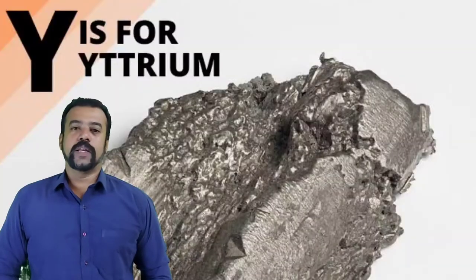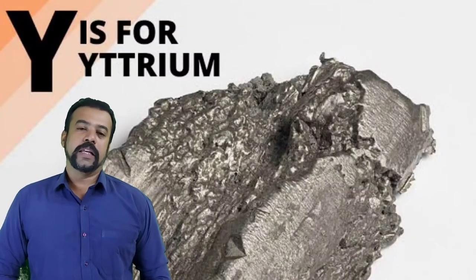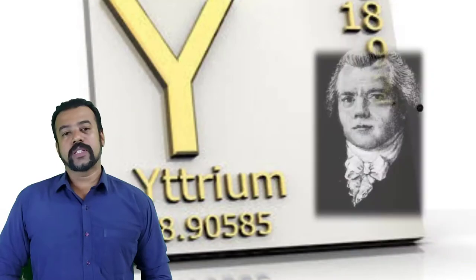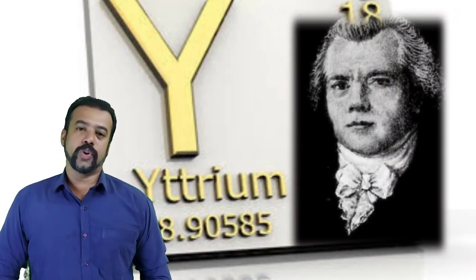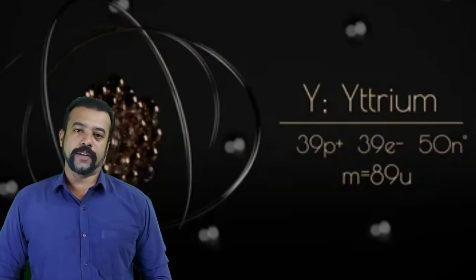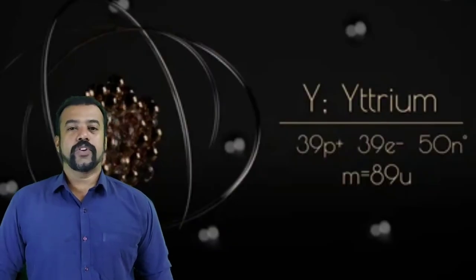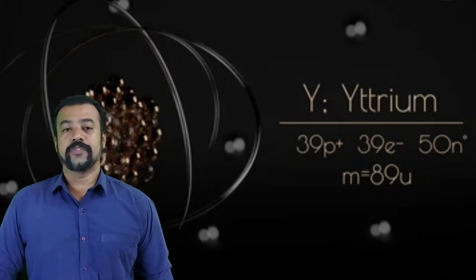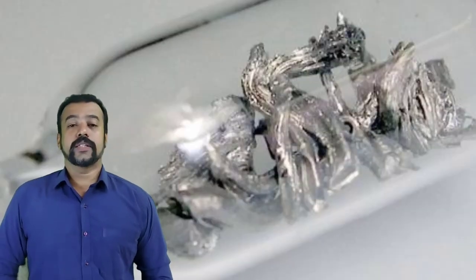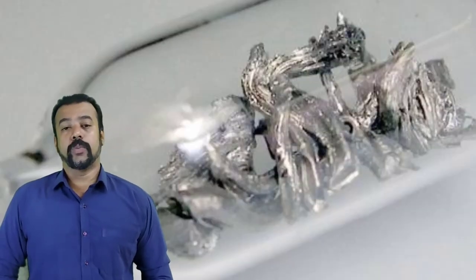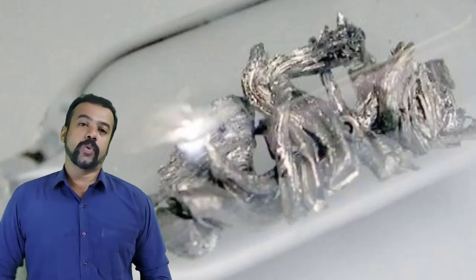Hello students, today in this session we're going to discuss yttrium. Yttrium was discovered in the year 1794 by Johan Gadolin. Yttrium consists of 39 protons and electrons and 50 neutrons. Yttrium is extracted from its compound yttrium chloride.